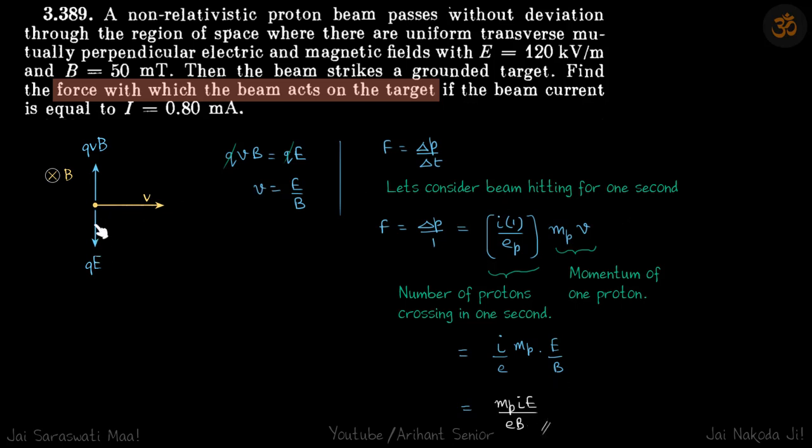Once more, the forces are balanced, which gives v equals E by B. The force is the rate of change of momentum, delta P by delta T. We consider one second, so we need to find the momentum of particles traveling within one second of beam, or how many are crossing in one second. The total charge of particles crossing in one second, divided by the charge of one proton, gives the total number of protons crossing in one second, times the momentum of one proton, which is Mp times v.